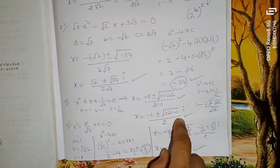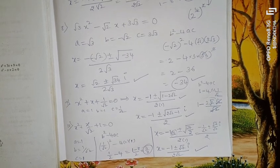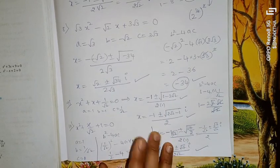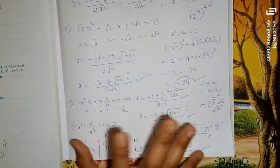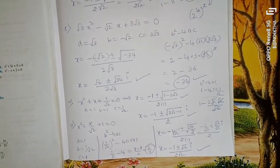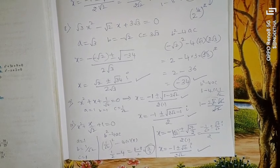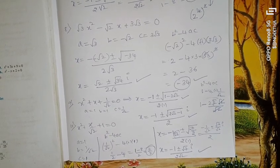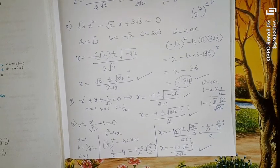This completes your complex numbers chapter on finding complex roots of quadratic equations. The key concept is simple: use the quadratic formula you learned in 10th standard, and when b² − 4ac is less than 0, the square root of the negative value introduces i = √(−1). Feel free to comment any doubts and share with friends. Thank you and god bless you.